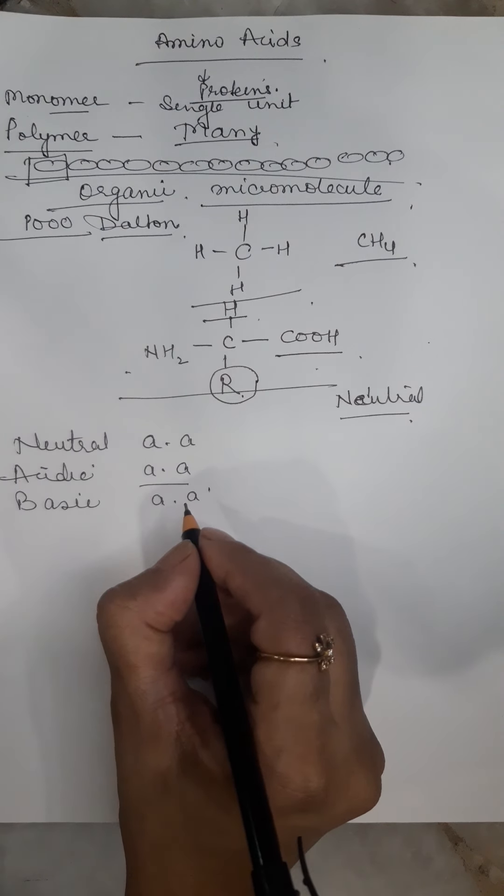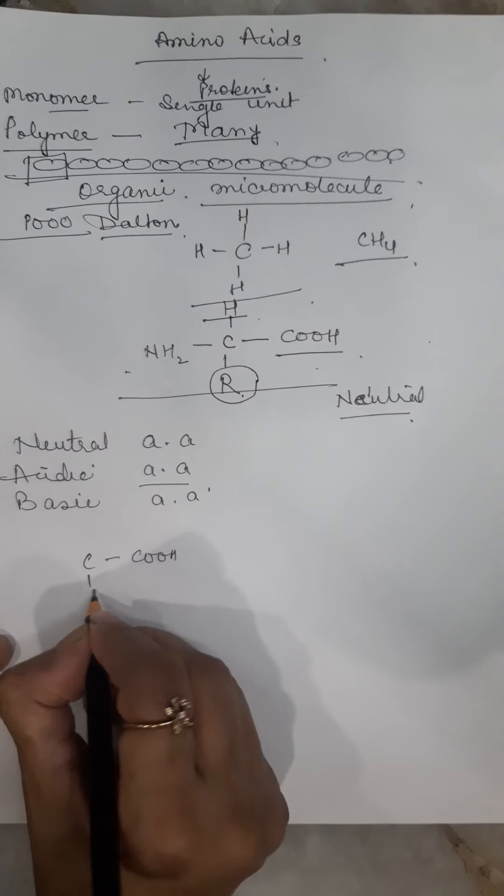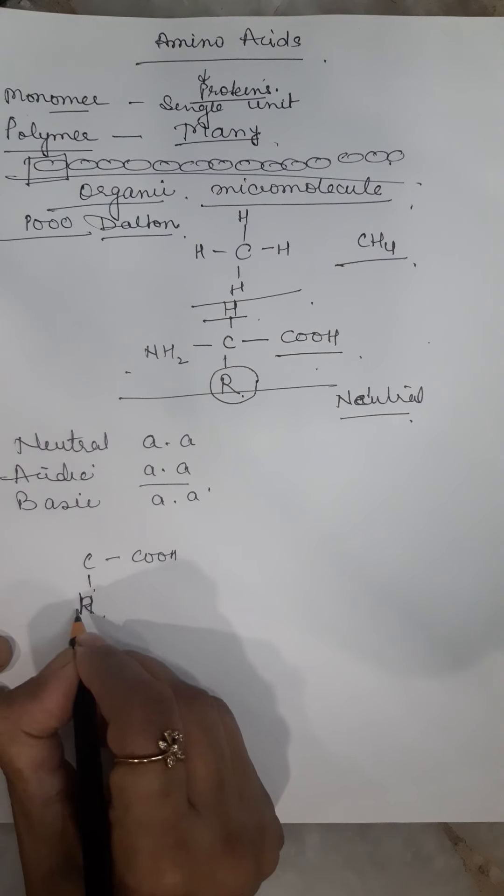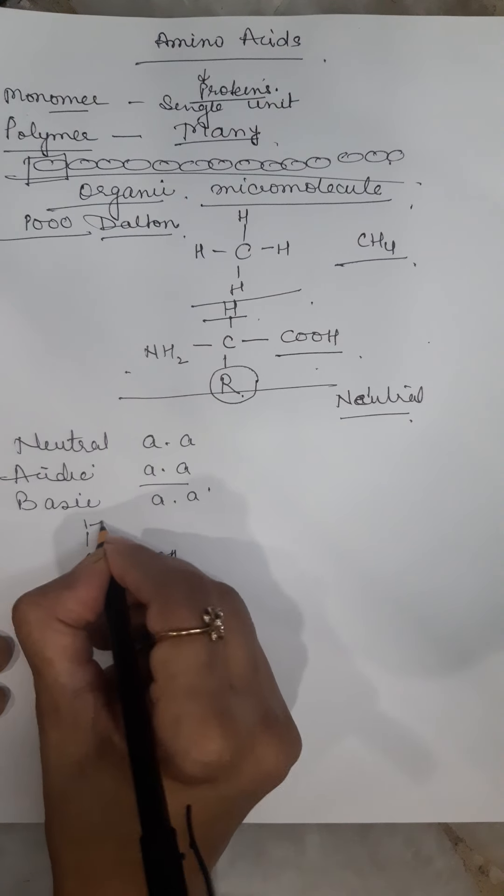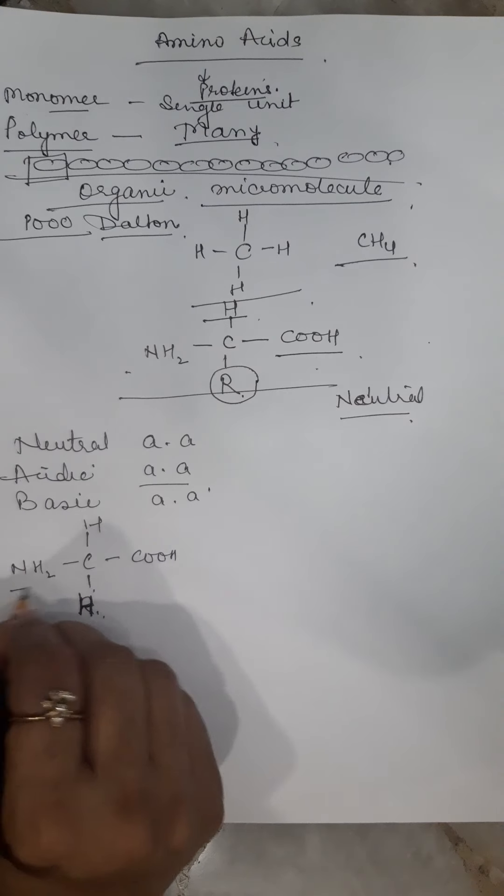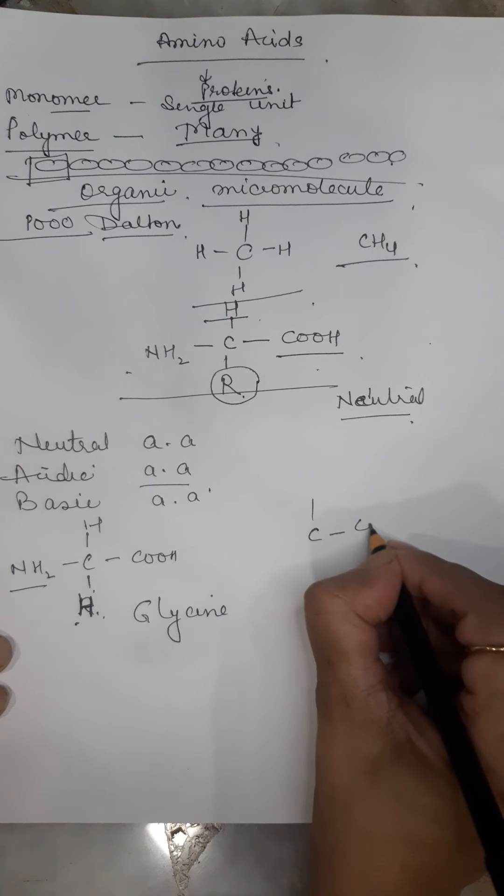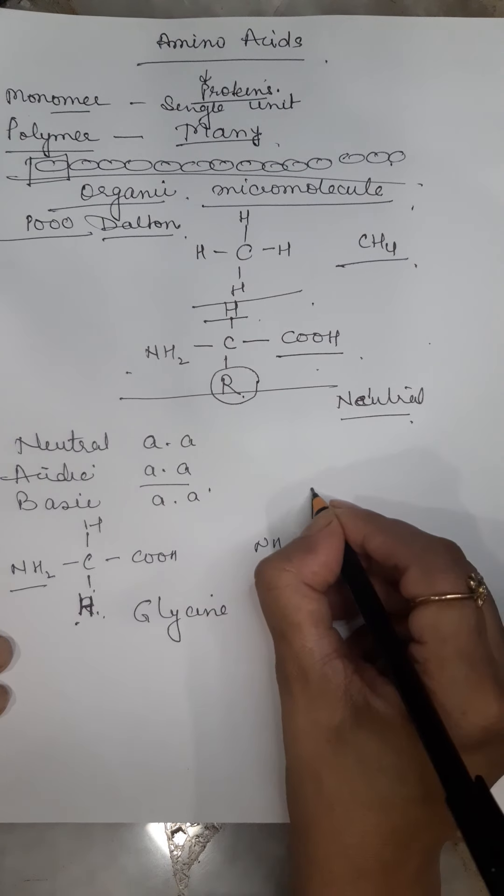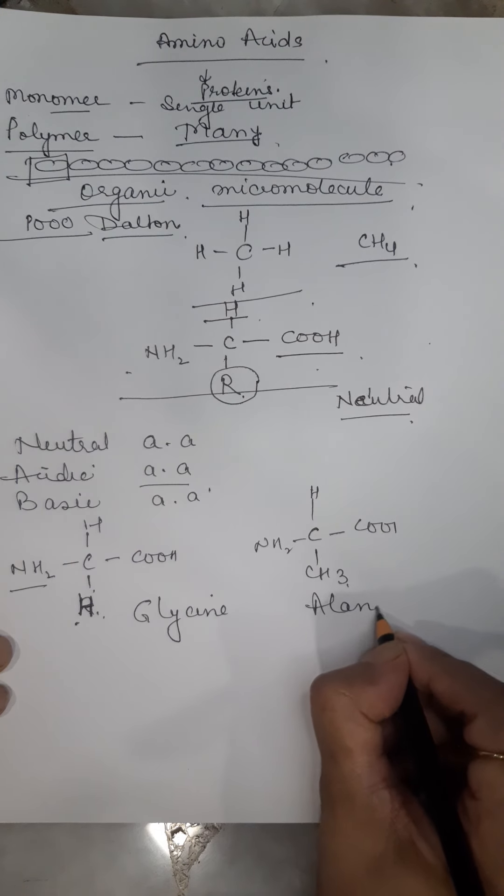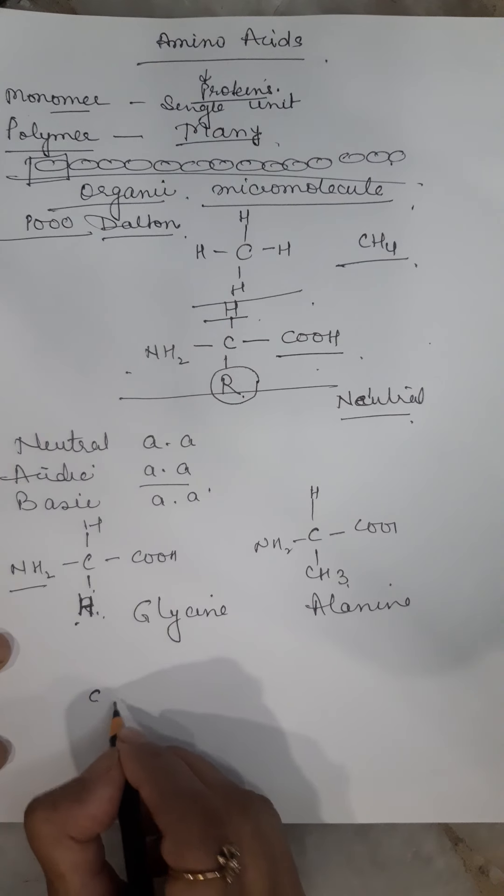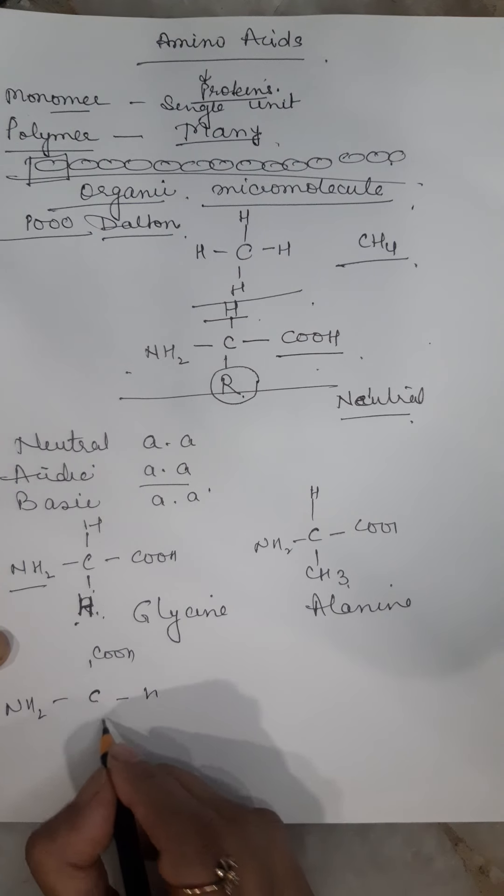For example, in this amino acid, instead of an alkyl group, there is hydrogen - this is glycine. In another one with a methyl group, this is alanine.